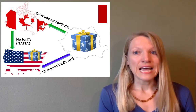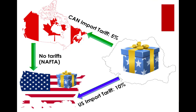For example, say that the demand for product A has increased exponentially in the U.S. and local U.S. suppliers cannot provide enough product to meet the demand. Country X has an oversupply of product A, and one way to solve the undersupply problem is to import product A from country X to the U.S. Say that the U.S. will charge a 10% import tax on product A when imported from country X, but Canada will only charge a 5% import tariff. It would be much more cost efficient to import product A from country X to Canada first and then to the U.S.